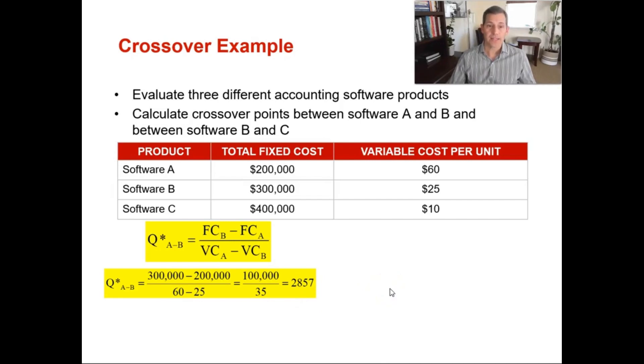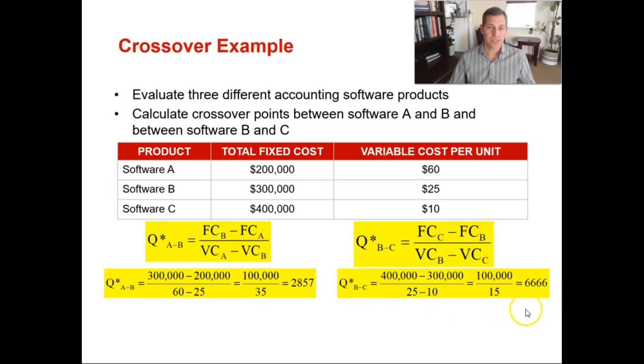Now let's do the crossover point for B and C. It's a different formula with different inputs. You're going to take $400,000, which is your fixed cost for product C, minus $300,000 for your fixed cost of software package B. On the bottom you've got your variable costs. So your variable cost for B is $25 minus your variable cost of C, which is $10. So $100,000 divided by 15 gives you a crossover point of 6,666 units. Now you've calculated your two crossover points: 2,857 and 6,666 units.